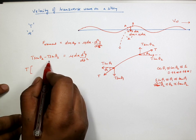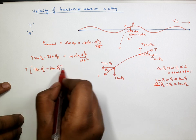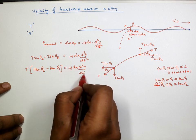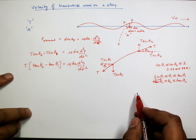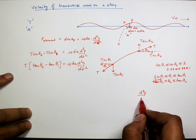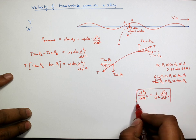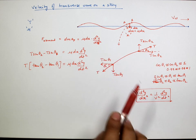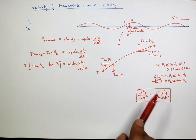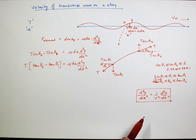We know that the general differential equation of wave motion in any medium is d²y/dx² = (1/v²) d²y/dt². This is the general differential equation of wave motion from mathematics. If we can express the disturbance on this rope in this form, then the coefficient will give us the velocity of the disturbance in the medium, which is the rope.